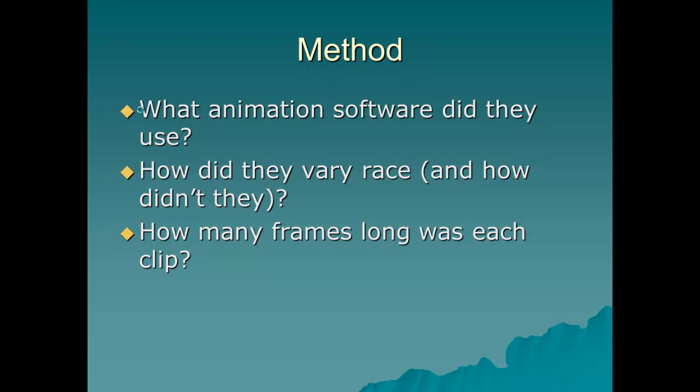In the method section, you're going to get some very specific information. For example, go and look at the article's method section for Study 1 and answer these questions: What animation software did they use? How did and how didn't they vary the race in the experiment? And how many frames long was each clip? You'll notice that the answers are very, very specific, which is appropriate for a method.